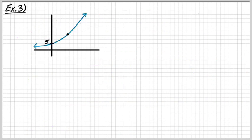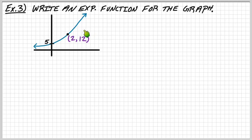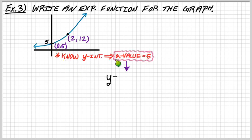Final example, Example 3: I'll give you just a sketch with some axes. There's a vertical intercept at 5 and a point at (2, 12). The question is to write the exponential function that models this graph. This is actually easier than what we just did. You have two points, but notice that 5 is the y-intercept — the point (0, 5) — so if you know the y-intercept, you already have your a value: a equals 5.